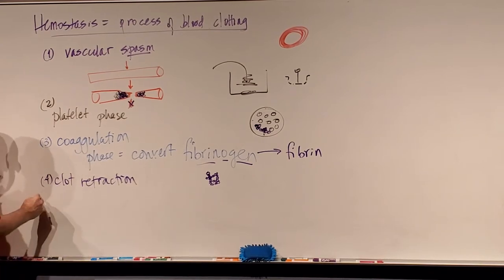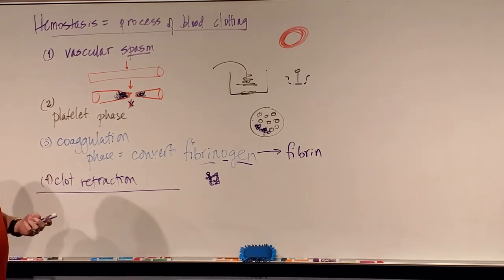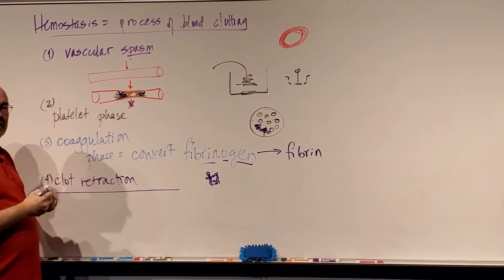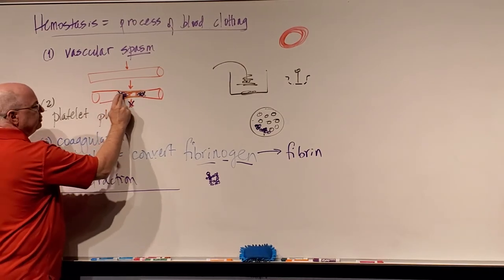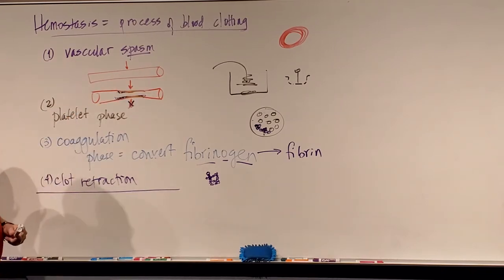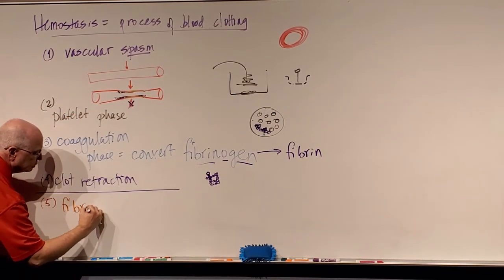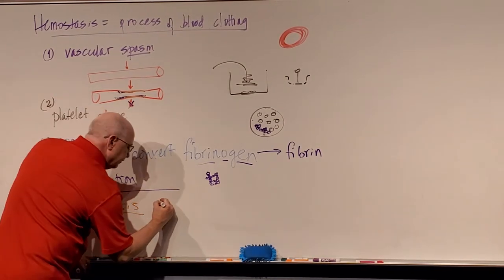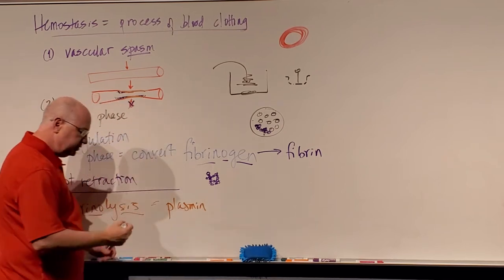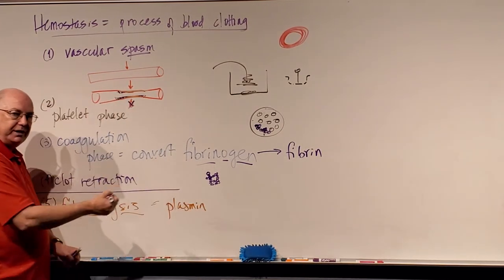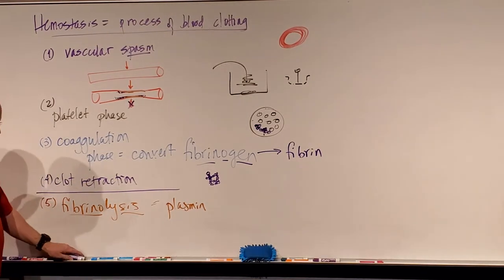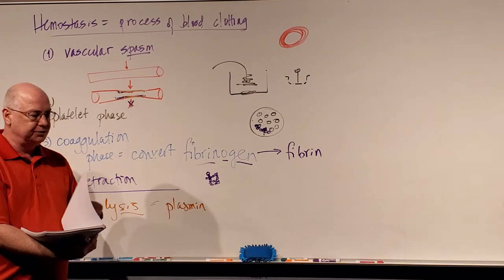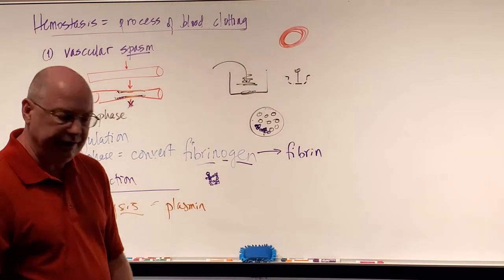If the vessel can be repaired, then fibroblasts will move in and start to rebuild the blood vessel and repair the wall. Once the wall is repaired, I can dissolve the clot and open up blood flow through. That's the fifth step. If we heal the vessel, we get fibrinolysis, the digestion of fibrin. There's a number of chemicals in our blood, but one of them is called plasmin. Plasmin and other chemicals like heparin can prevent clots from forming or can help dissolve clots.